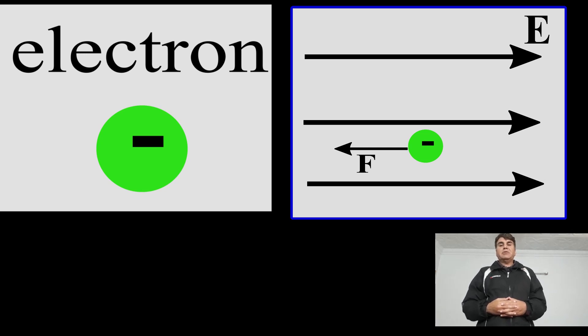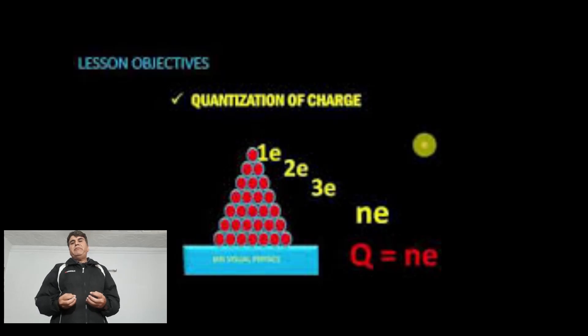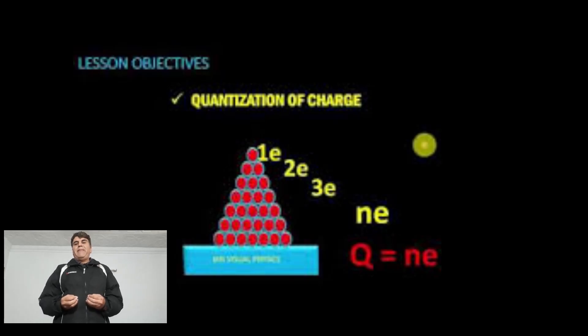From here we noted that the charge of a body is quantized in terms of electronic charge, and for balanced number of electrons and protons, the body remains electrically neutral. In electromagnetism, we were told that charge is the property of matter whose motion constitutes current.